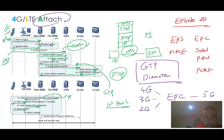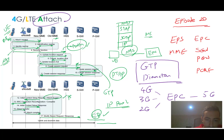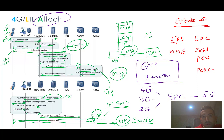The eNodeB sends an Attach Complete message to the new MME. After that, if needed, a Modify Bearer Request is sent to the SGW to update tunnel information. At this point the task of the CP (Control Plane) is done, and the UP (User Plane) and data service start. This is a direct tunnel, and within this direct tunnel there can be many sessions.